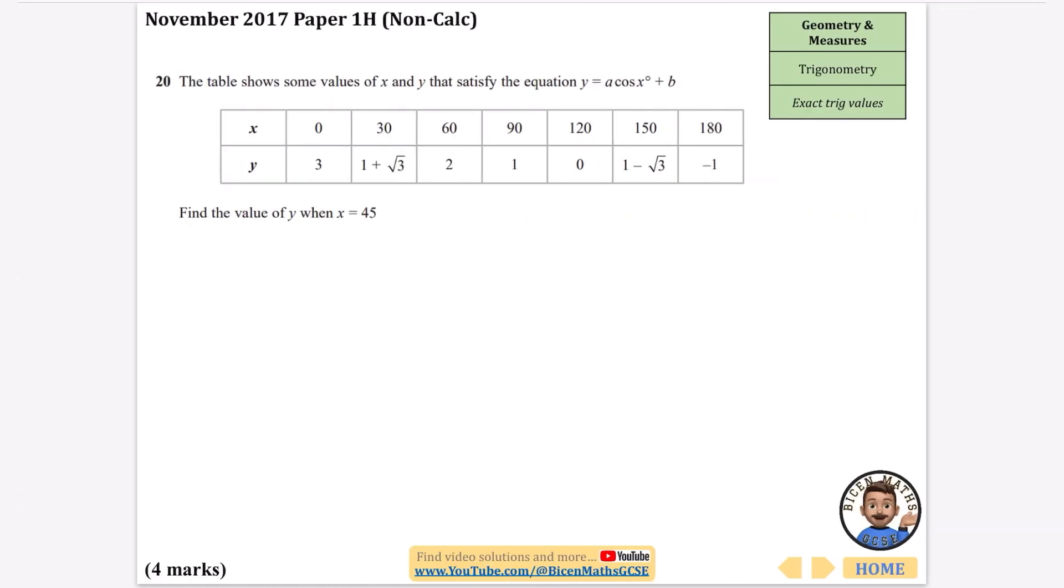This one is weird. It kind of blends a few different things together, but fundamentally, you do have to know exact trig values to do this. The table shows some values of x and y that satisfy the equation y equals a cos x plus b. And it says find the value of y when x is 45. So I think what we need to do to begin with is find out the value of a and the value of b. And I'm interested in the values in this table that look a little bit easier to deal with. I would be interested in this one, this one, or this one. I think those are probably the simplest. The two that I'm going to use are probably these two. I just think that cos of 0 and cos of 90 are going to be quite easy to find out. So bearing in mind that our equation is y equals a cos x plus b.